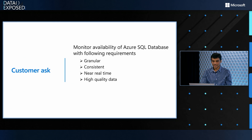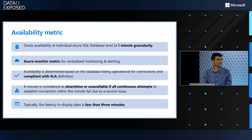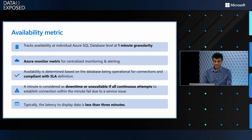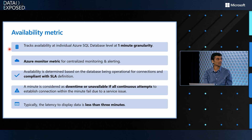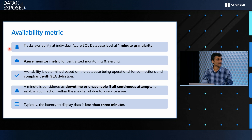Observability is a key factor where many customers are pivoting around, and they wanted transparency into what is going on into the resource. And here's our answer — we have exposed an availability metric in the Portal. It tracks availability of individual databases at a one-minute granularity, and it's applicable for both Singleton and Elastic Pool.